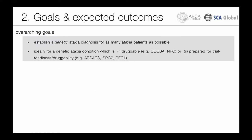We agreed upon the overarching goal of this working group: given that it's not purely a clinical working group, it has to relate to the trial-readiness platforms of ARCA Global. The goal is to establish a genetic diagnosis for as many ataxia patients as possible to increase the number of patients eligible for trial-readiness and treatment studies — ideally for a genetic ataxia condition which is already druggable now, like CACNA1A or NPC, or currently being studied like ARSACS, SPG7, or RFC1.